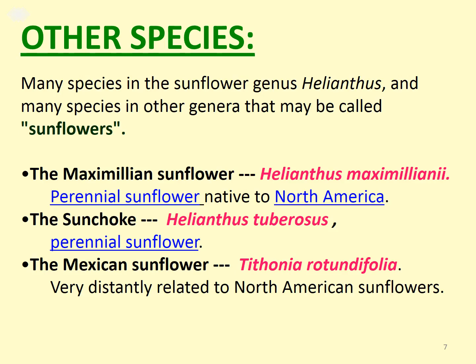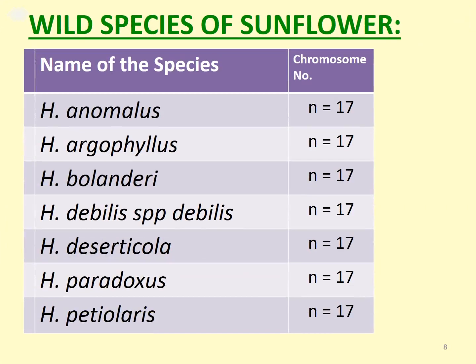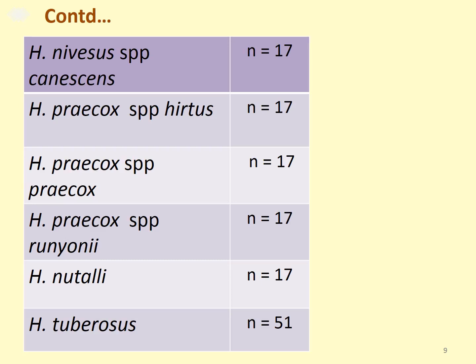The Mexican sunflower is Tithonia rotundifolia, which is distinctly related to North American sunflowers. Around seven wild species are enlisted: Helianthus anomalus, Helianthus argophyllus, Helianthus neglectus, Helianthus debilis subsp. debilis, Helianthus deserticola, Helianthus paradoxus, Helianthus petiolaris, Helianthus niveus subsp. canescens, Helianthus praecox subsp. hirtus, Helianthus praecox subsp. praecox, Helianthus praecox subsp. runyonii, Helianthus nuttallii, and Helianthus tuberosus. All annual species have chromosome number 2n=34.